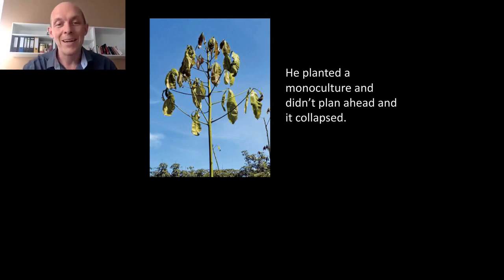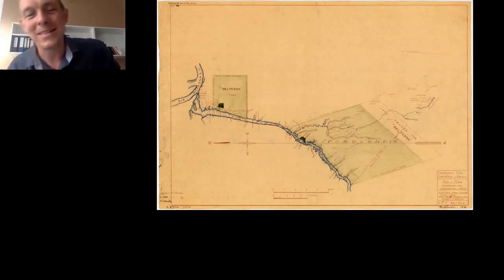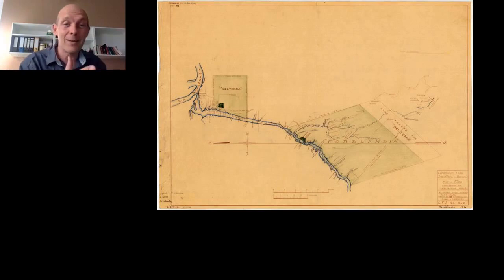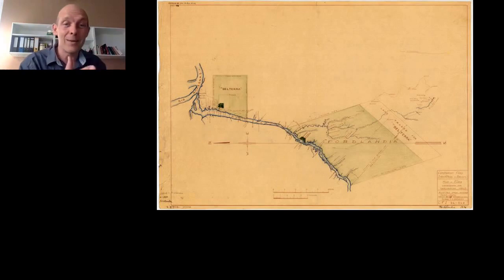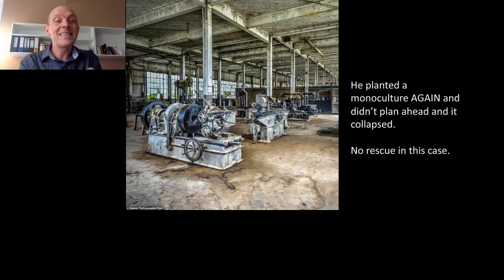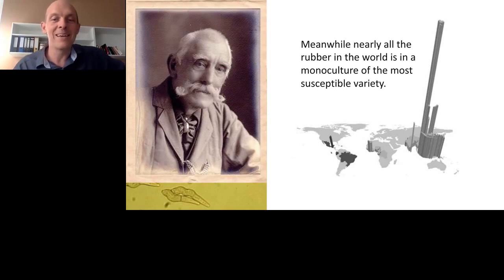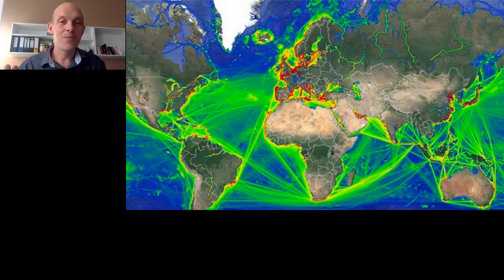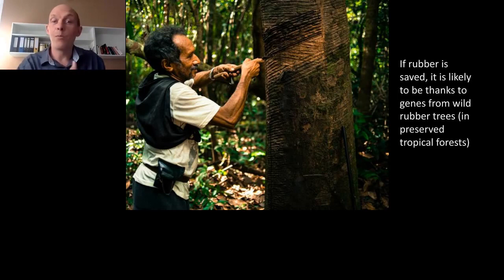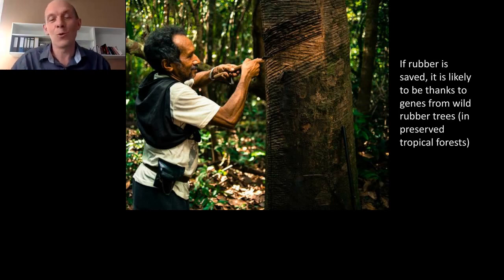Nature won because he planted a monoculture and didn't plan ahead. But unlike other collapse stories where people at least get a new plant variety, Ford just said give me some new land. He traded back Fordlandia, got a new hunk of land in Brazil, and did exactly the same thing — planted a monoculture again and it collapsed again. In this case there's no rescue. Nearly all the world's rubber today is a monoculture of the most susceptible variety, all grown in tropical Asia. All it would take is one spore of leaf blight to wipe it out within a couple of years, and there's no solution. Any future solution will almost certainly come from wild varieties in the forest with resistance to leaf blight, but virtually no one is working on this.